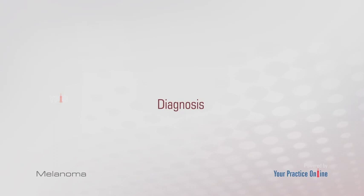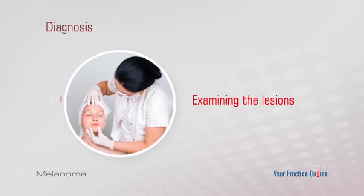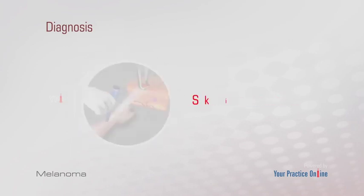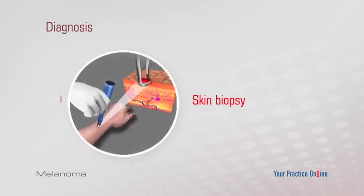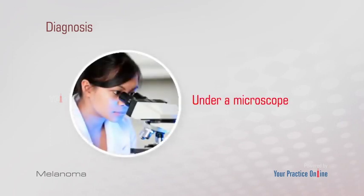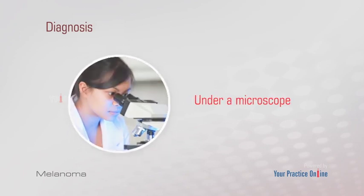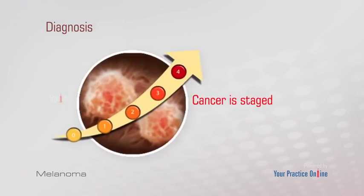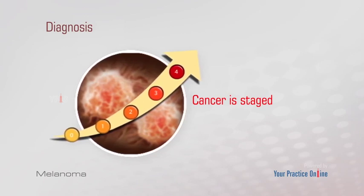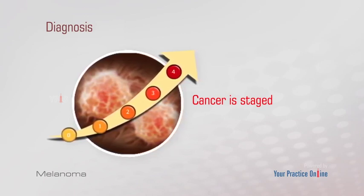Your dermatologist diagnoses melanoma by visually examining the lesions. If any lesions are suspicious, a skin biopsy will be done where a part or the entire lesion will be removed and observed under a microscope for cancer cells. If a diagnosis of melanoma is confirmed, the cancer is staged based on its severity as stage 0 through 4.